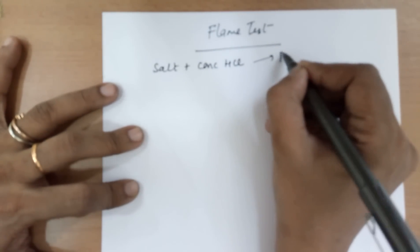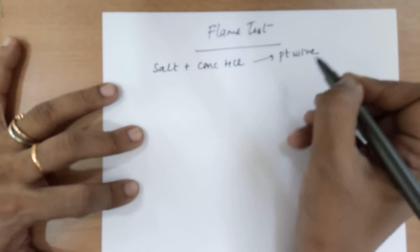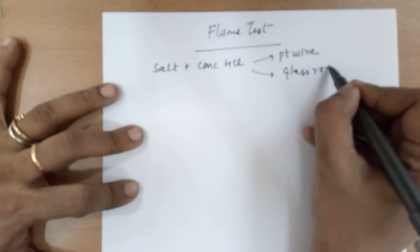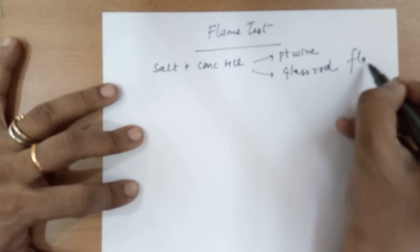You need a pinch of salt plus concentrated HCl to make a paste of it. And then you may either use platinum wire or use a clean glass rod and introduce it to the flame.